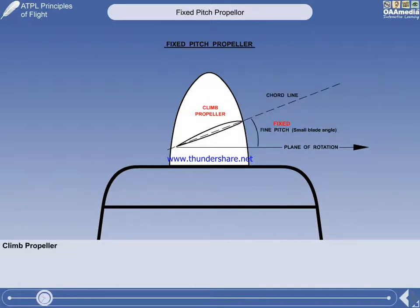The other type of fixed-pitch propeller is called a climb propeller. This type of propeller is not very common. To give maximum efficiency at low speed, a climb propeller has a smaller blade angle than a cruise propeller.